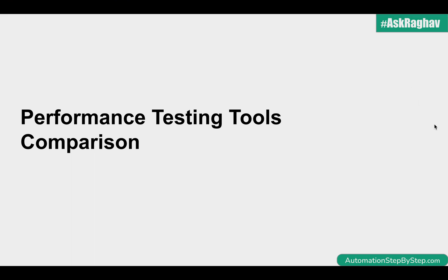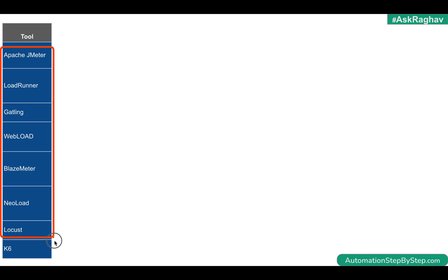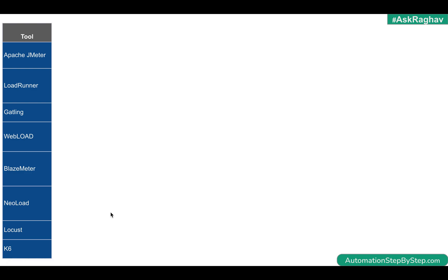Hello and welcome, I'm Raghav and today we are going to see some very common performance testing tools and compare them against each other. In this list we are going to see Apache JMeter, LoadRunner, Gatling, WebLoad, BlazeMeter, NeoLoad, Locust, and K6. These are some very commonly used performance testing tools, though there are some others as well.